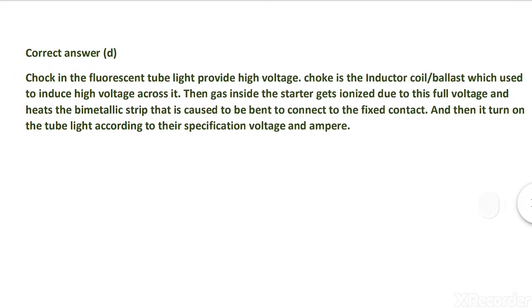The chock in fluorescent tube light provides high voltage. Chock is the inductor coil which is used to induce high voltage across it. Then gas inside the starter gets ionized due to this high voltage and heats the bi-metallic strip that is caused to be bent to connect the fixed contact. And then it turns on the tube light according to their specification voltage and ampere.